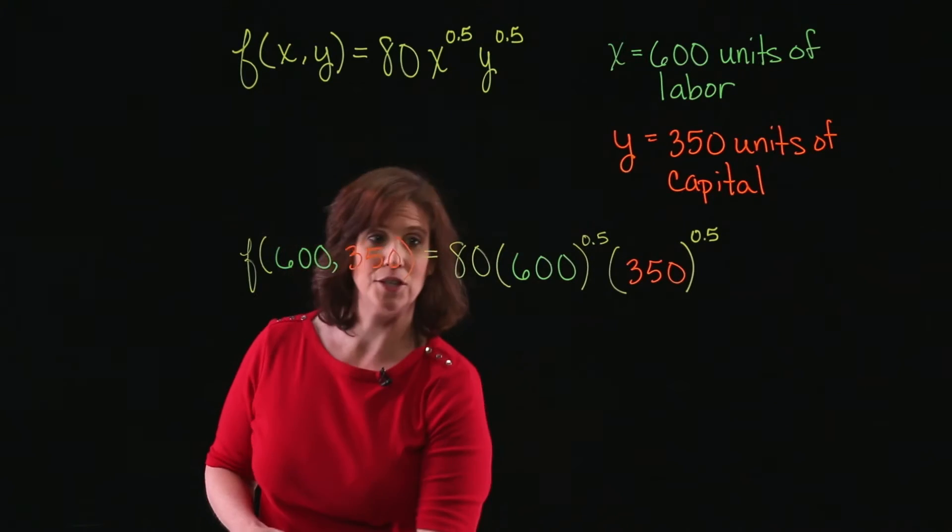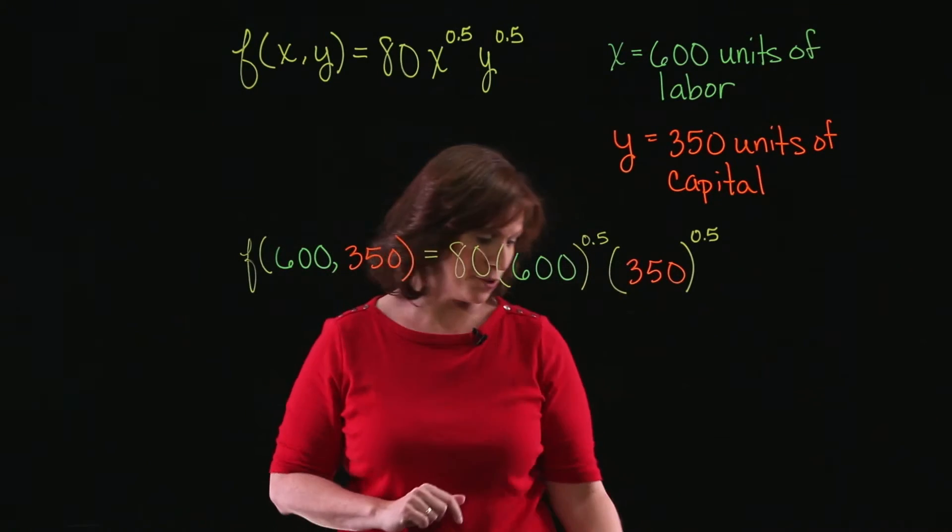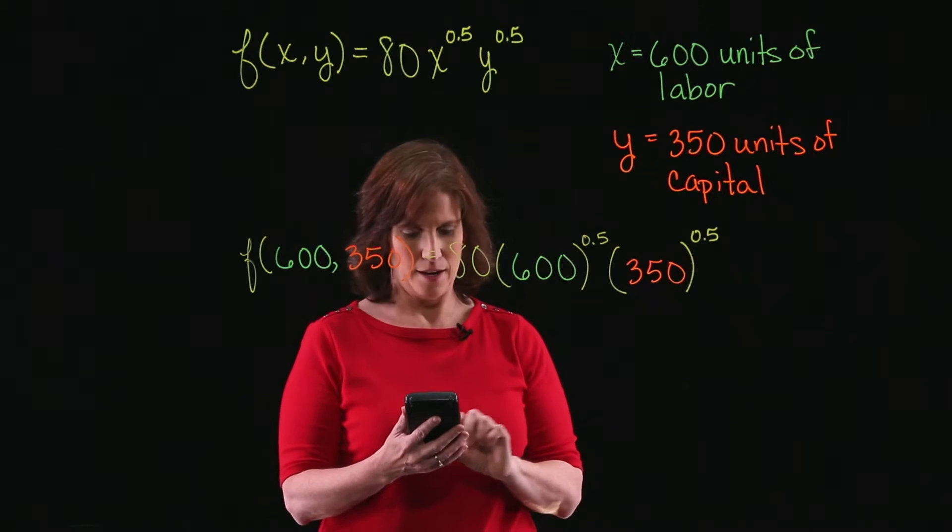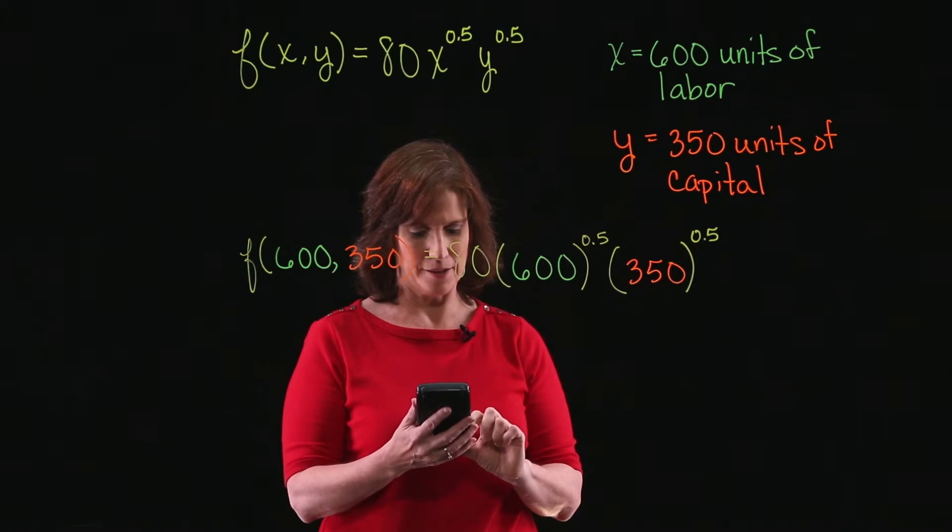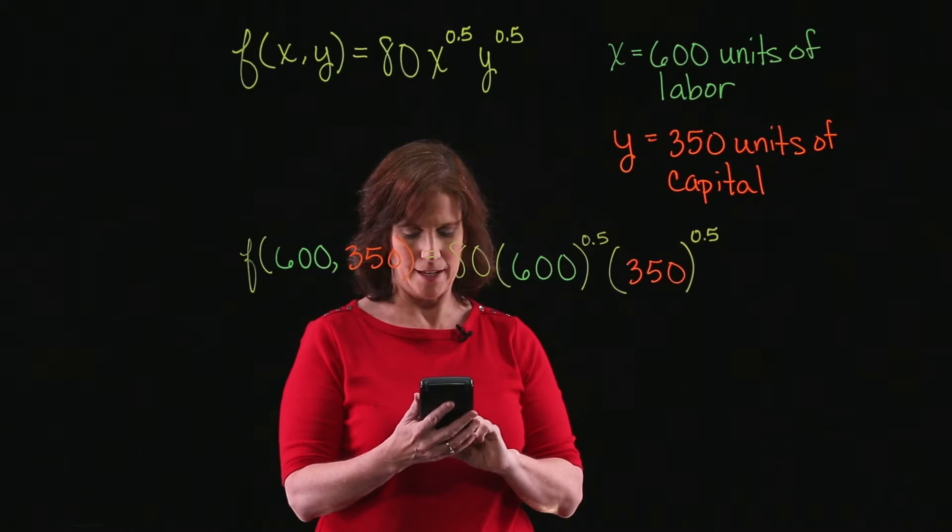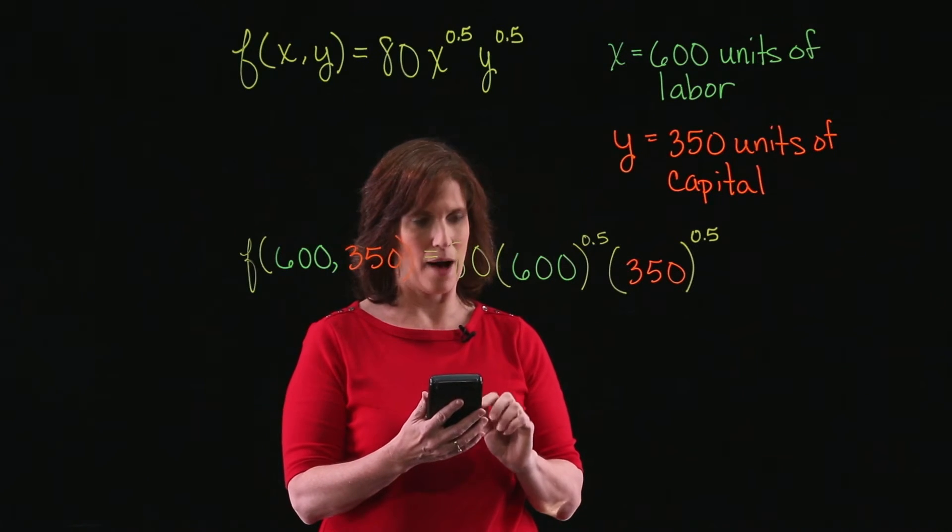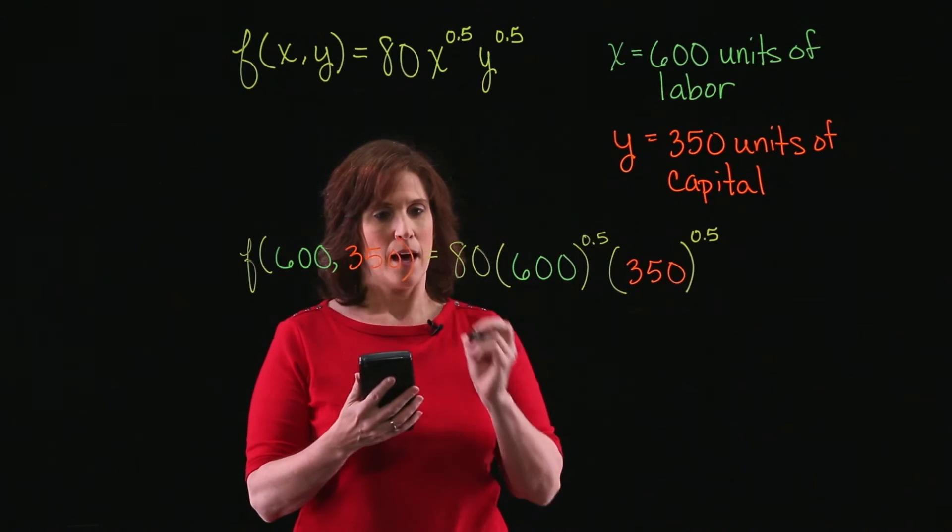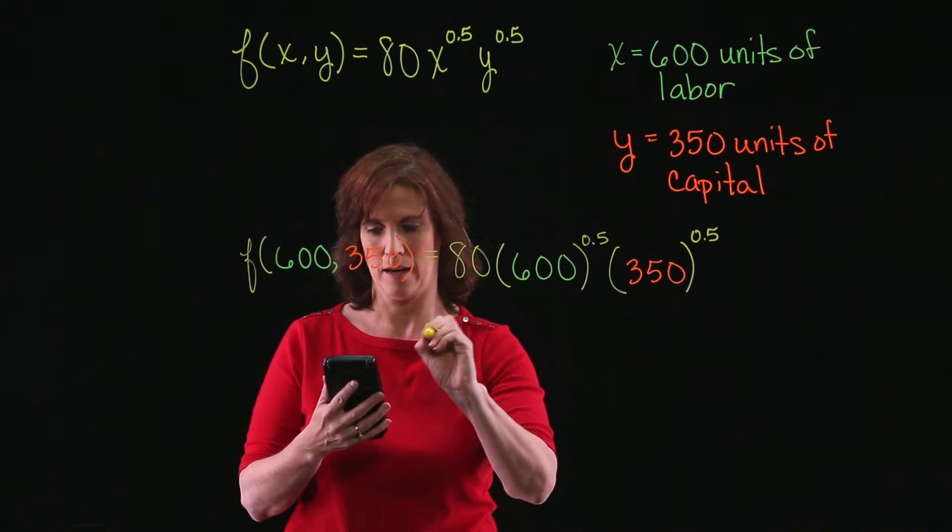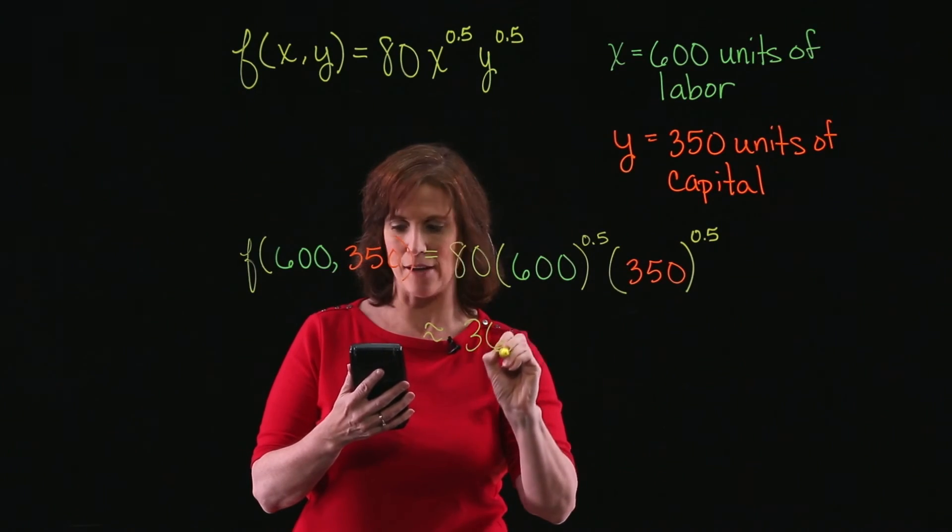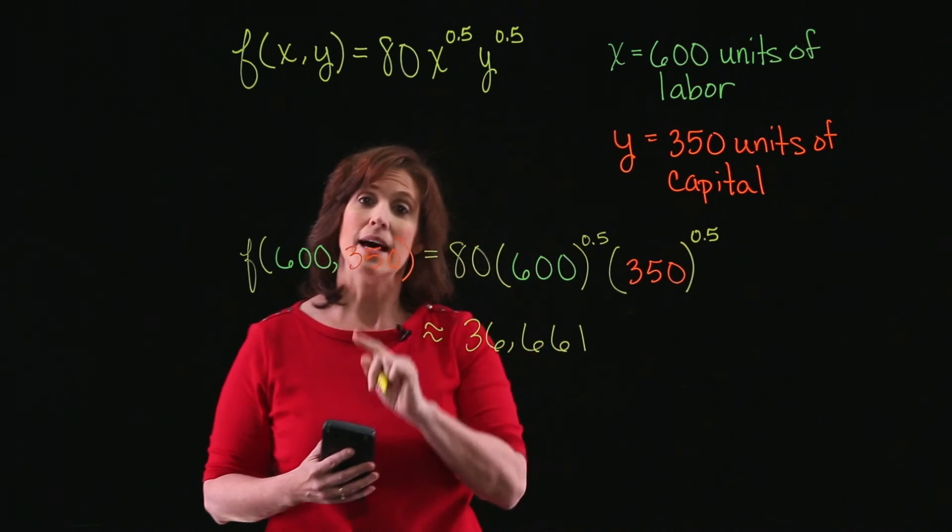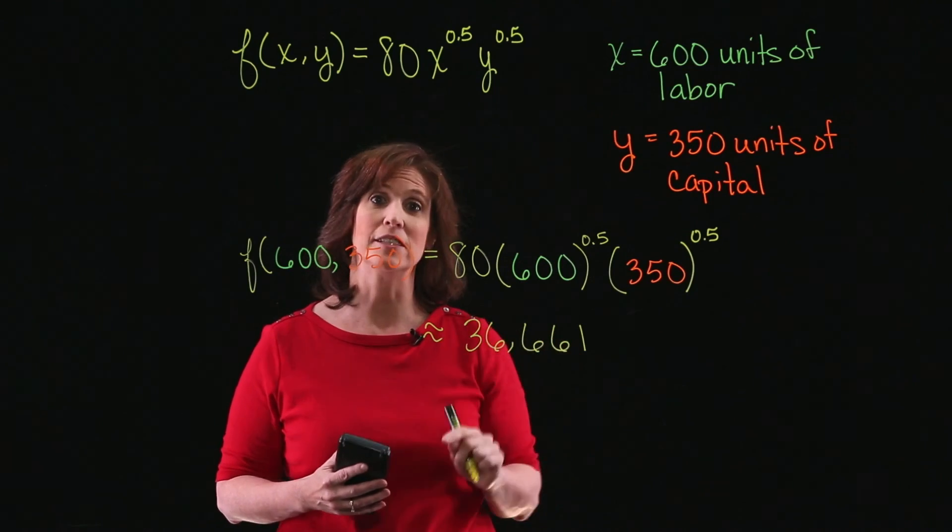And at this point, all we need to do is calculate this value. So I'm going to use my calculator. And I've got 600 raised to the 0.5 power times 350 raised to the 0.5 power times 80. And I end up with approximately 36,661. Because this is a production level, I've rounded to the nearest unit.